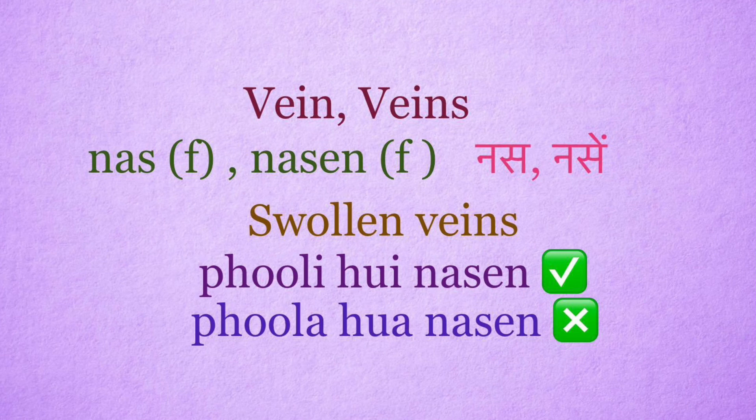Vein: nass. Veins: nassay. It's a feminine word. Swollen veins: right use is phooli hui nass or nassay. Wrong use: phoola hua nass or nassay.